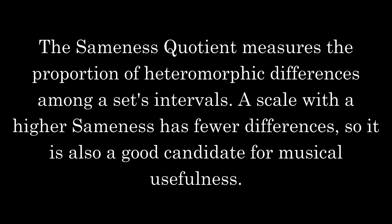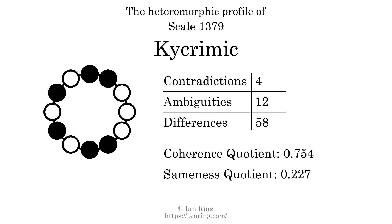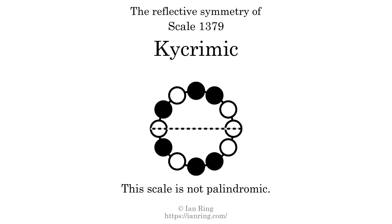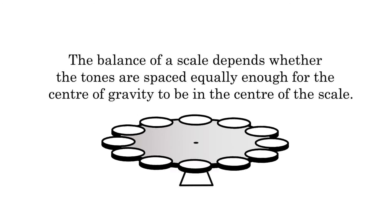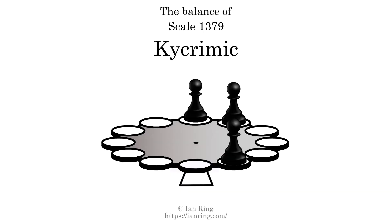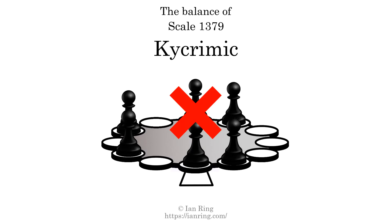The sameness quotient measures the proportion of heteromorphic differences among a set's intervals. A scale with a higher sameness has fewer differences, so it is also a good candidate for musical usefulness. The sameness quotient is 0.227. This scale has reflective symmetry across an axis position 3 semitones from the root. This scale has a different pattern of intervals ascending and descending, so it is not palindromic. This scale has one ridge tone. This scale is not balanced.